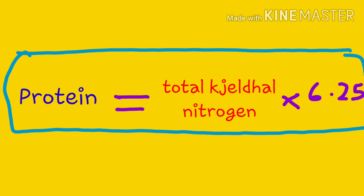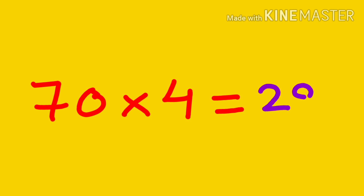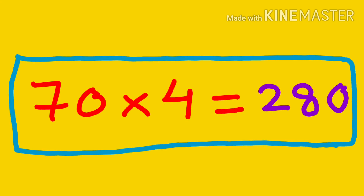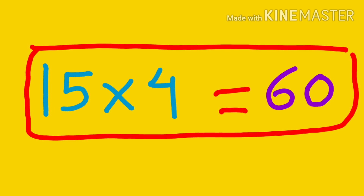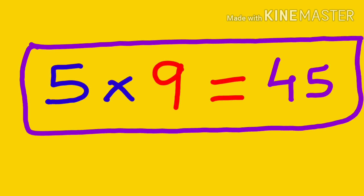For those still confused about the energy calculation, here is an example. Consider a product containing 70 grams of carbohydrate, 15 grams of protein, and 5 grams of fat. The calorie equivalent for each nutrient will be: carbohydrate — 70 × 4 = 280 kcal; protein — 15 × 4 = 60 kcal; fat — 5 × 9 = 45 kcal. So the total calorie content of the food commodity is the sum of all these values.